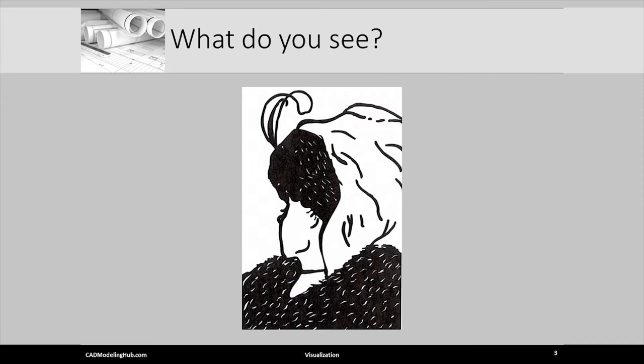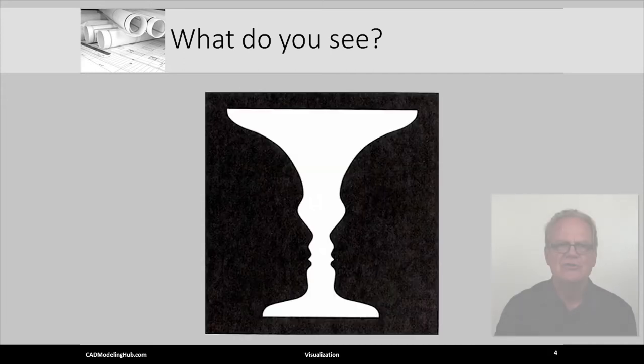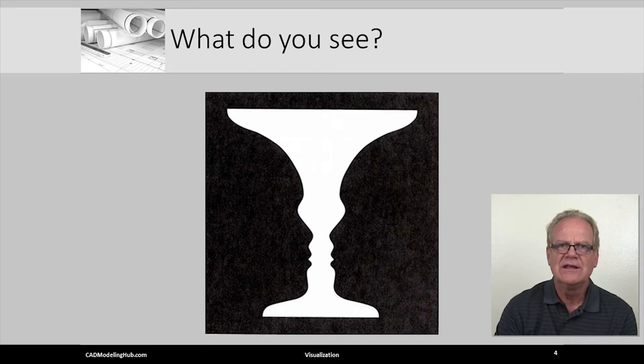When we create views of mechanical objects, the goal is to send one and only one interpretation. Notice this goblet. Or, is it two silhouettes about to kiss? Which of these interpretations is correct?